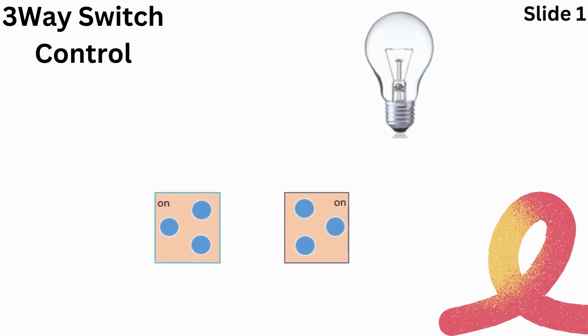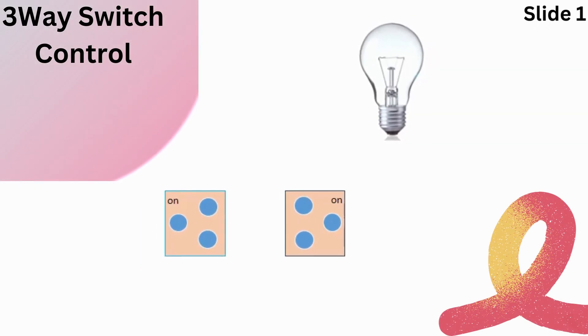In a three-way switch system, two switches are used to control a single light or fixture from two different locations.